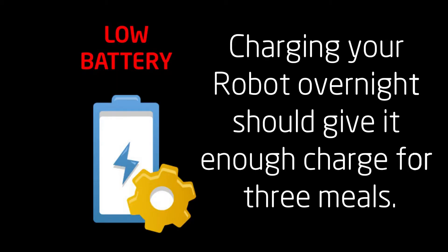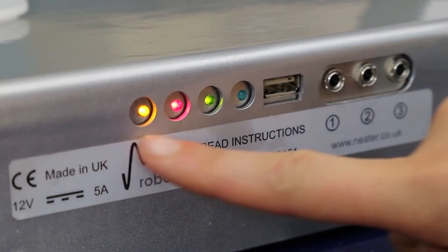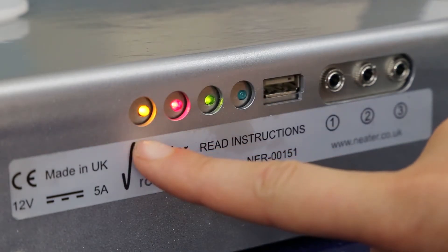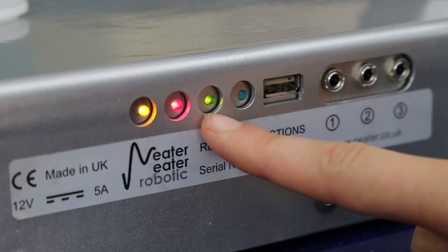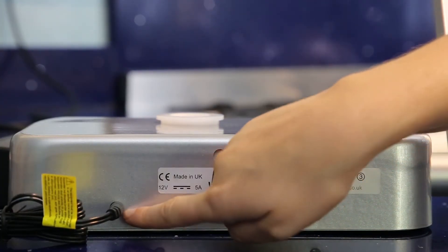Charging your robot overnight should give it enough battery to last for 3 meals. The LEDs on the back of your robot indicate different things. The orange LED means the robot is charging. The green LED means your robot is plugged into external power. If the green LED is lit and the orange LED is not lit, then the battery is fully charged.